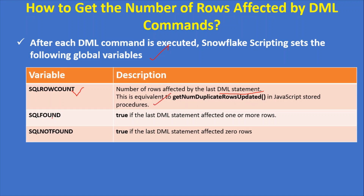The second variable is SQLFOUND. This returns true or false. If it returns true, that means the last DML statement affected one or more rows. The third variable is SQLNOTFOUND, which returns true if the last DML statement affected zero rows — for example, if you run an UPDATE statement that returns zero rows. These are the three variables currently available in Snowflake to get the number of rows affected by DML commands.